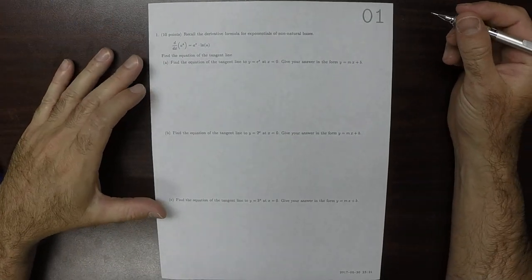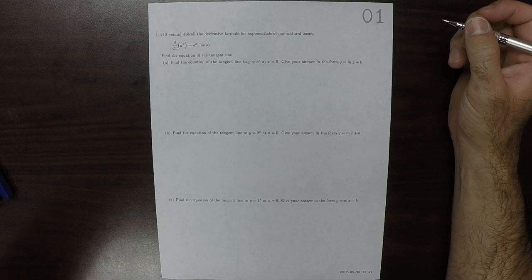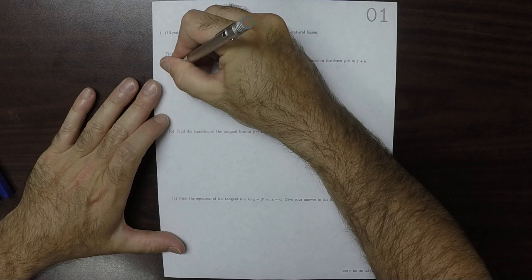This is the solution to written homework 1. It says find the equation of the tangent line. Well, to find any line, you need a point and a slope.